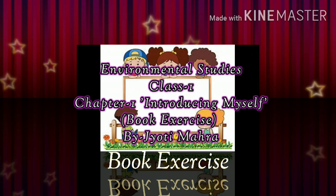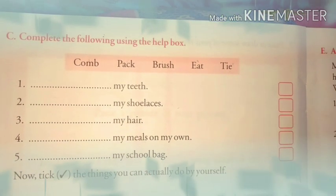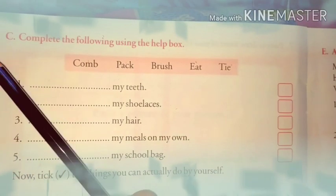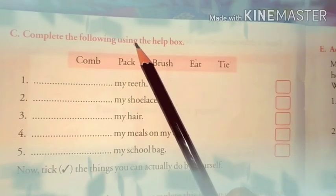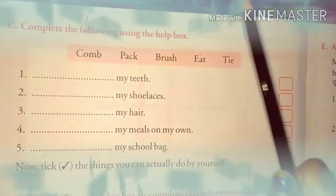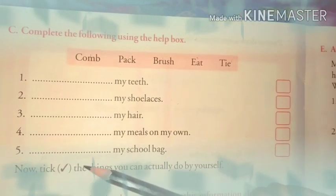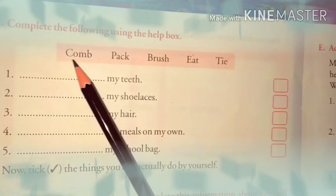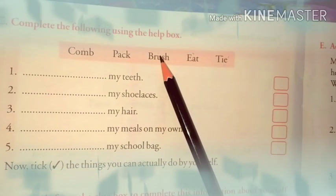Children, open to page number 10 in your EBS book and let's do the exercise. This is the exercise of page number 10. Complete the following using the help box. In this exercise, you have to complete the following sentences by using the words given in this red box.